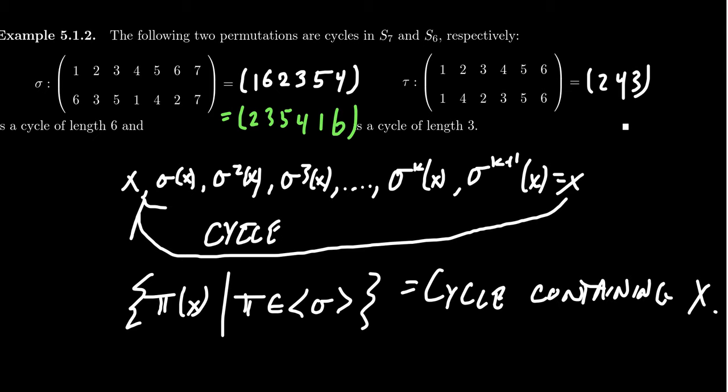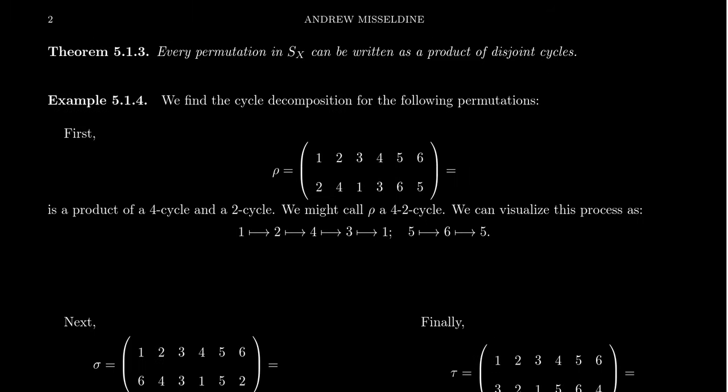Now, I should also mention that not every permutation is a cycle. These two examples were cycles, but not every permutation is a cycle. On the other hand, every permutation can be written as a product of disjoint cycles up to reordering. And that's actually the statement here for theorem 5.1.3. Every permutation in S_X can be written as a product of disjoint cycles. Now, how do we see this?